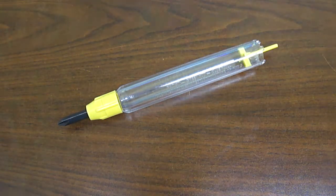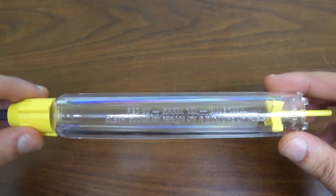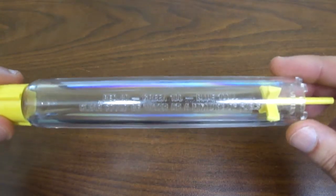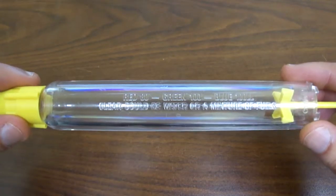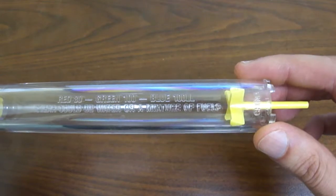Another nice feature about this design is that on the side it tells you specifically the color coating for fuel. It says red with the number 80, green for 100, and blue for 100 low lead.